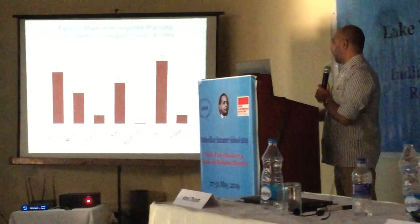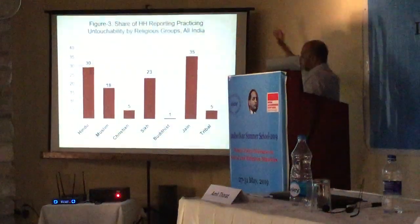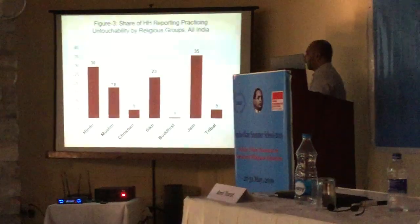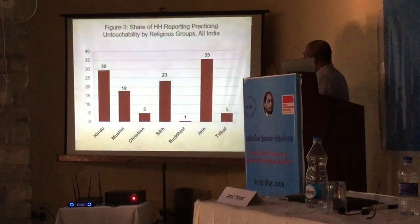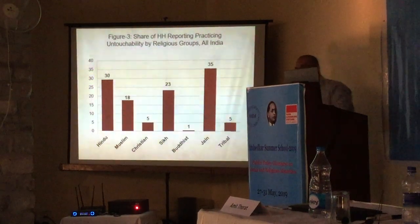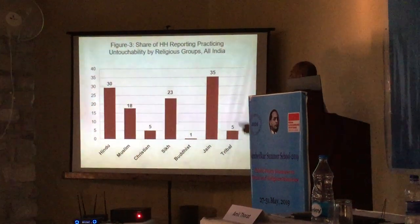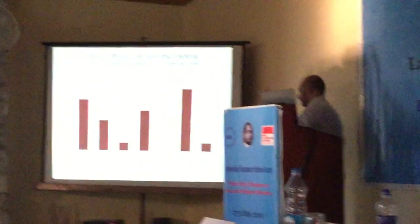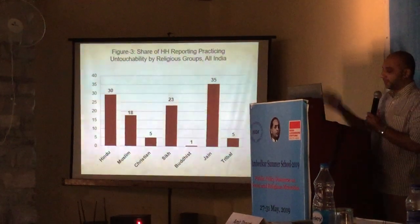Looking at practice by religious groups, surprisingly 23% of Sikhs, 18% of Muslims, and 35% of Jains reported practicing untouchability. Jains are a tricky category because they won't even eat things grown underground like onions and garlic, so anyone entering their kitchen is essentially out of the question — Dalit or non-Dalit — making interpretation difficult. It is a mixed bag.